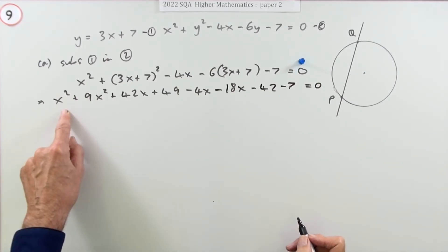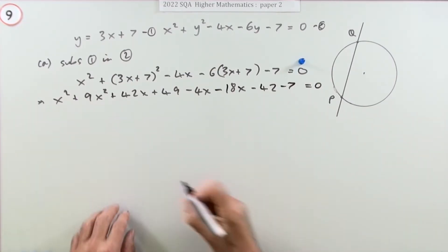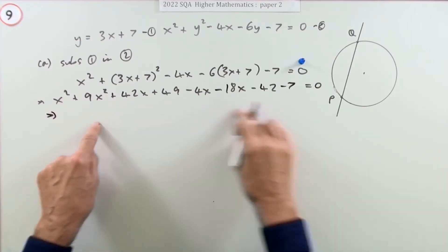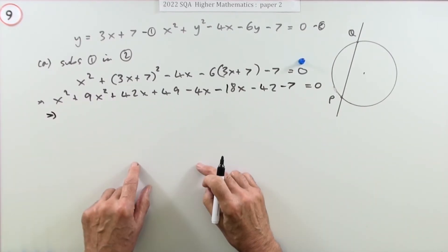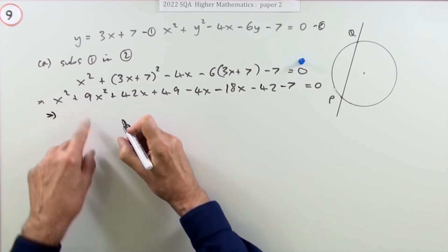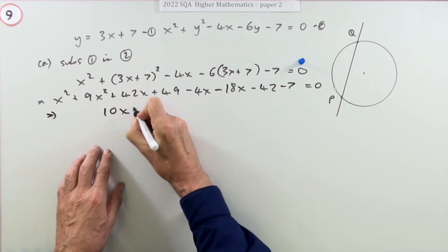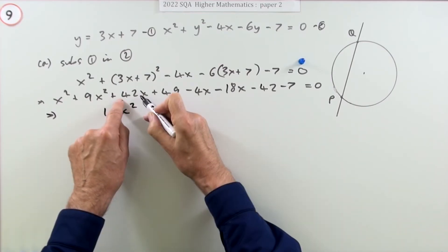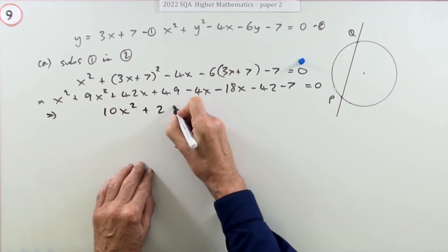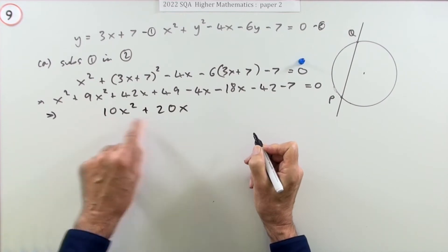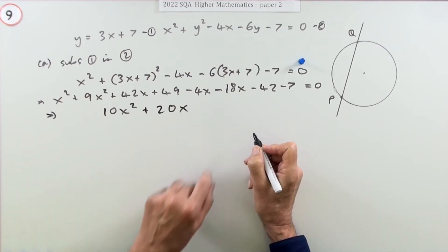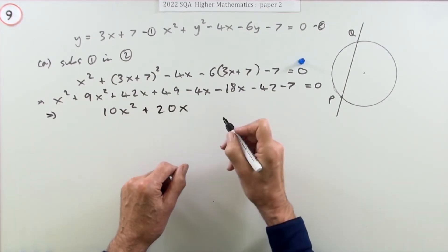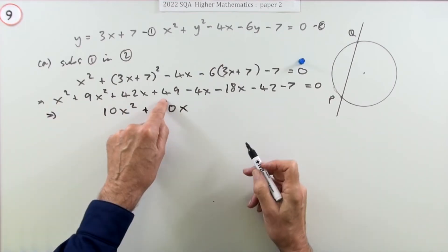Now just gather it all up because it's just a quadratic. That's the highest power you've got, x squared. So you can end up with a quadratic equation. The x squared, you've only got 1 and 9 makes 10. So 10x squared. Now the x's. For the x's, you've got a minus 22. So that makes it a 20. So that's looking good so far. We've got multiples of 10. If this is also a multiple of 10, or even a multiple of 5, it would be fine.